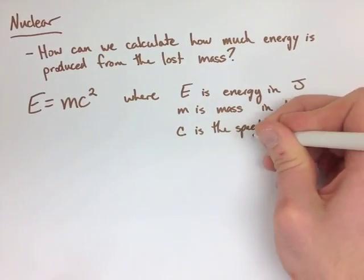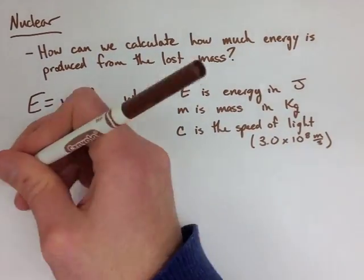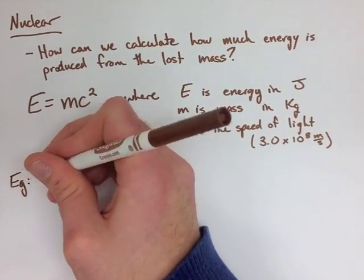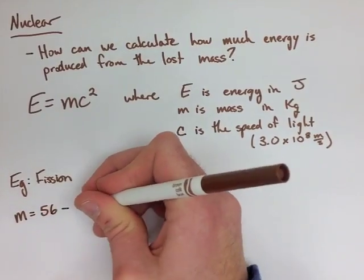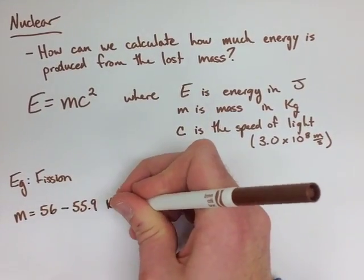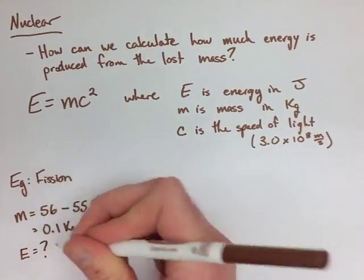So if we look at this first example, we have a fission reaction where we have some mass lost, and we want to find out how much energy is actually being produced. So at the start of this reaction, we have a mass of 56 kilograms, and at the end, we have a mass of 55.9 kilograms, a difference of 0.1 kilograms.